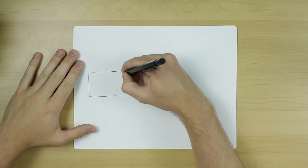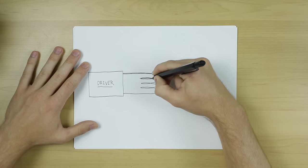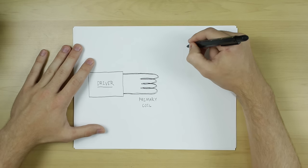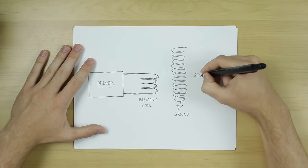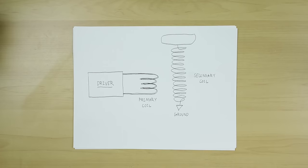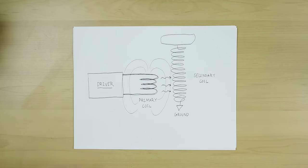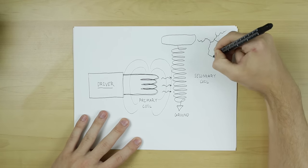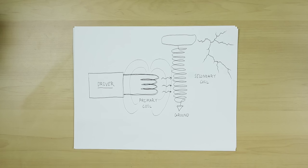First off, let me explain some basics about the modern DRSSTC, just so we're on the same page. Like all Tesla coils, the main goal is to switch power through a small primary coil at a rate close to the resonant frequency of a much larger secondary coil. By doing this when the coils are close together, the primary coil magnetically couples some of its energy into the secondary coil, where the voltage is magnified enough to break down the air and form an arc.